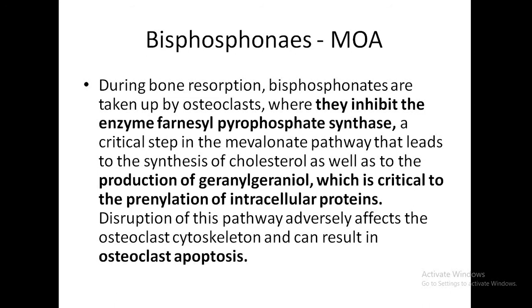The mechanism of action of bisphosphonates is as follows. During bone resorption, they are taken up by osteoclasts and inhibit the enzyme farnesyl pyrophosphate synthase. This enzyme plays a critical role in the mevalonate pathway, leading to the synthesis of cholesterol as well as the production of geranylgeraniol, which is critical to the prenylation of intracellular proteins. When this prenylation is disrupted, it affects the osteoclast cytoskeleton, resulting in osteoclast apoptosis and thus decreased bone resorption.